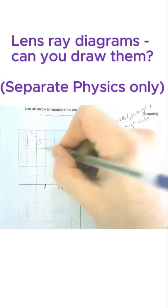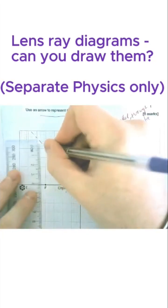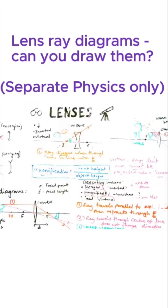Like with a magnifying glass, it's made the image bigger and it is virtual. So three marks, one for each. And if you want to find out more about lenses and other types...